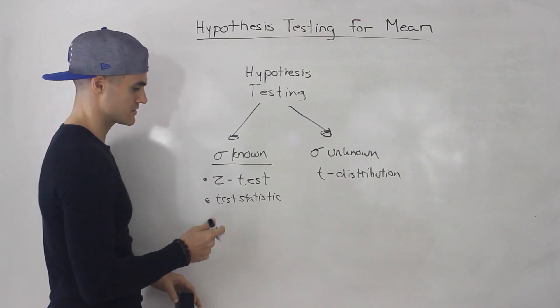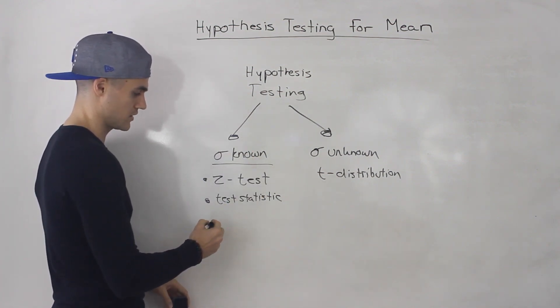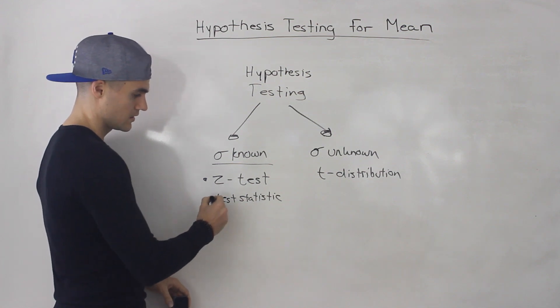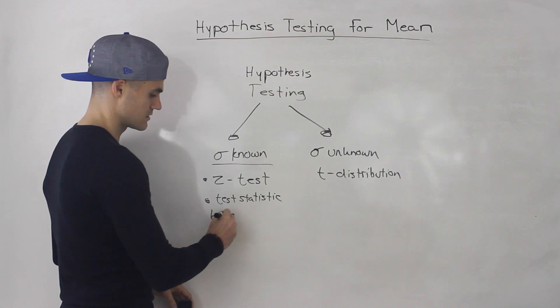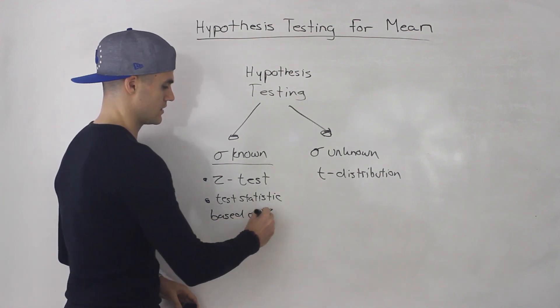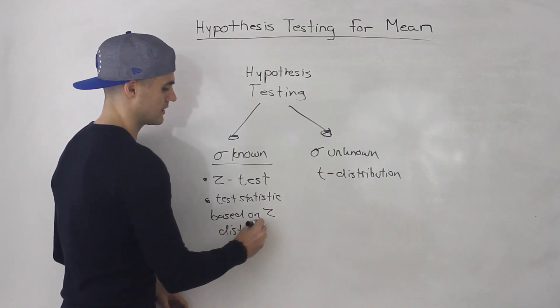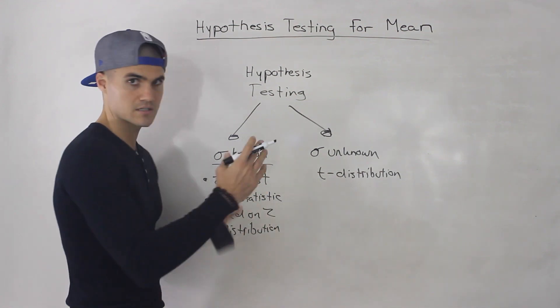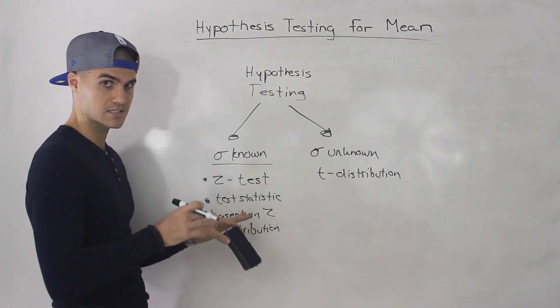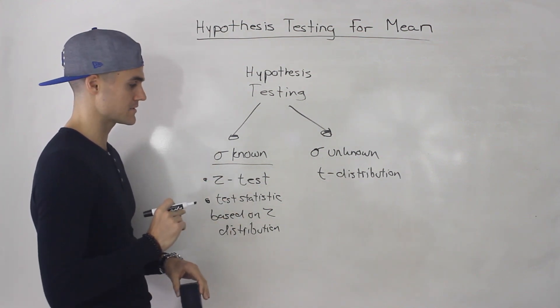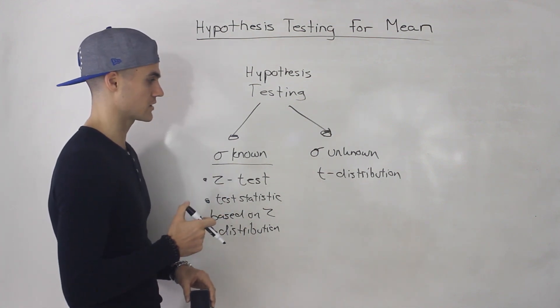So the test statistic that you calculate is going to be based on the Z distribution. So basically, the acceptance and rejection regions are going to be on a Z distribution. And then that test statistic is going to go on that same distribution. You're going to see, are you going to reject the null or fail to reject it?